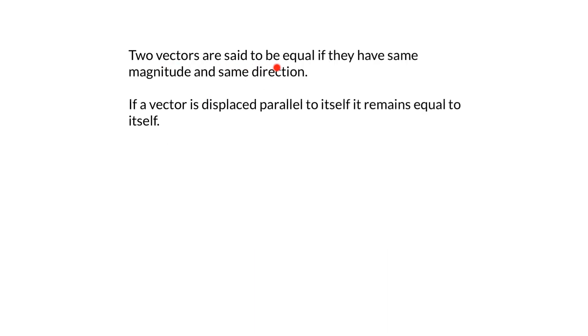Notes: Two vectors are said to be equal if they have the same magnitude and same direction. And if a vector is displaced parallel to itself, it remains equal to itself.